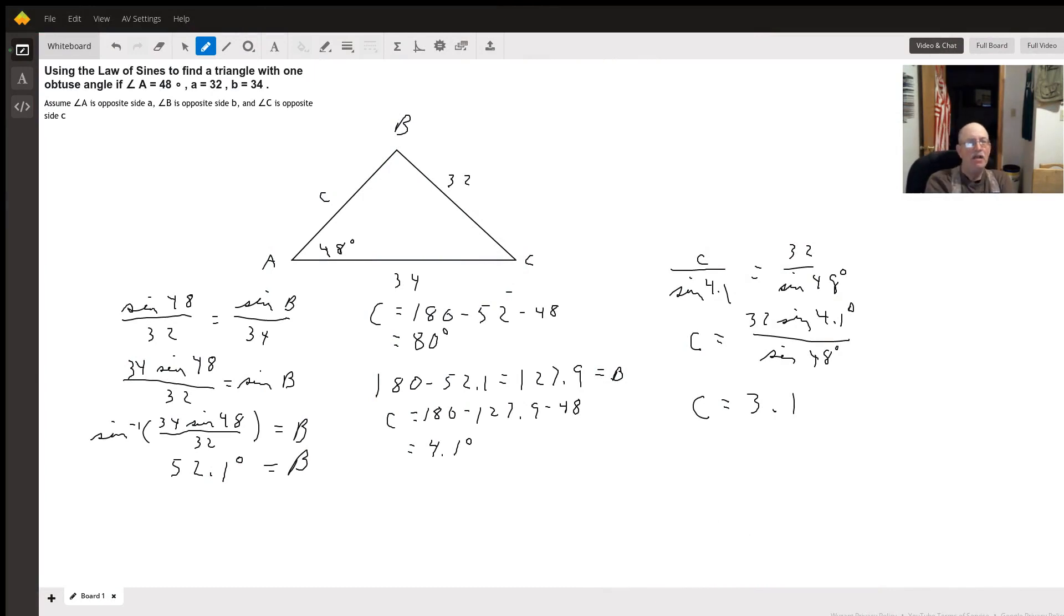Hello. So here's our triangle. Angle A is 48 degrees, side A is 32, side B is 34. We need to figure out angle B, angle C, and side C.